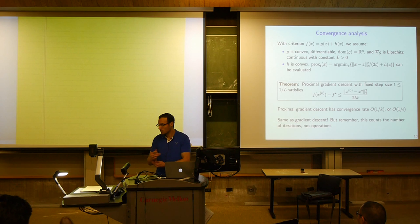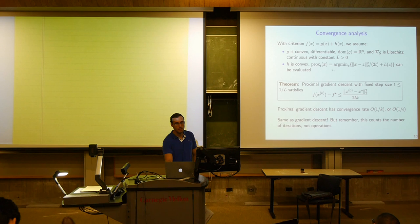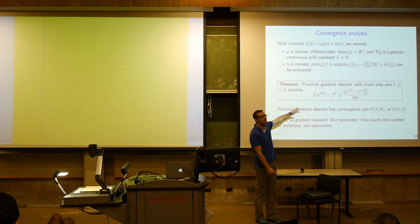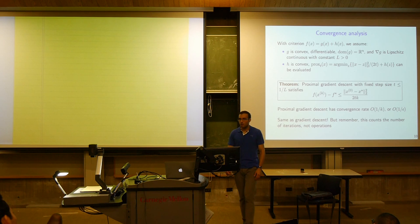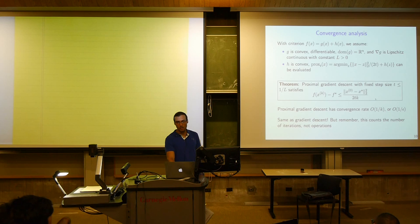The setup is very similar: g is smooth with a Lipschitz gradient, both g and h are convex, and h has a tractable prox operator. The result is essentially the same: after k iterations, the difference between f at x_k and the optimal value f-star is less than or equal to the squared distance between where we started and the solution, divided by 2 times t times k. So to get epsilon accuracy, we need on the order of 1 over epsilon iterations.